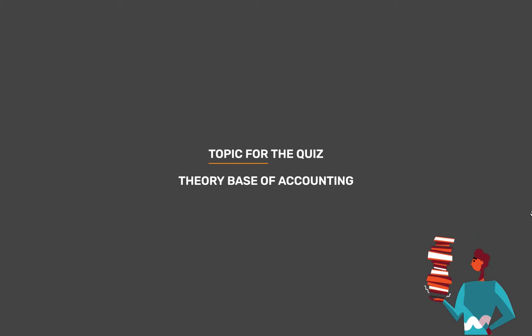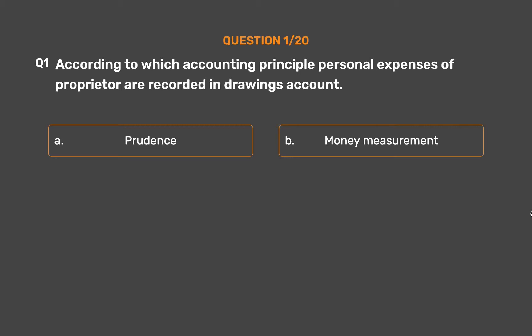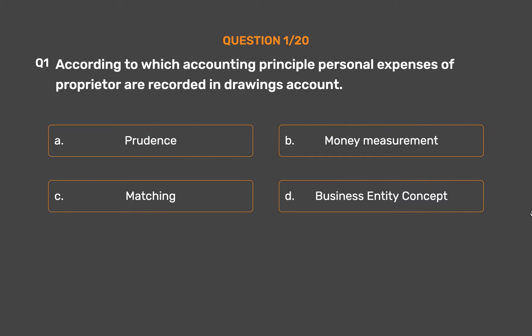Topic for today's quiz is Theory Base of Accounting. Question No. 1: According to which accounting principle are personal expenses of a proprietor recorded in the drawings account? Option A: Prudence. Option B: Money Measurement. Option C: Matching. Option D: Business Entity Concept.